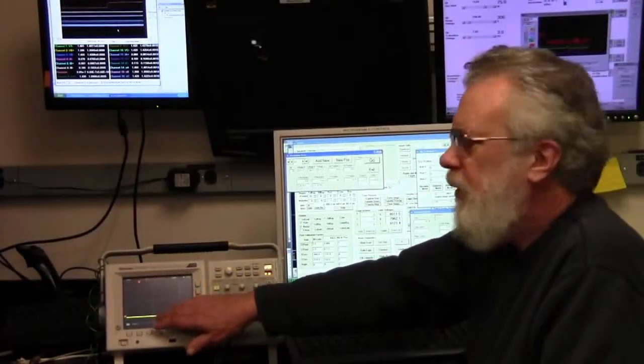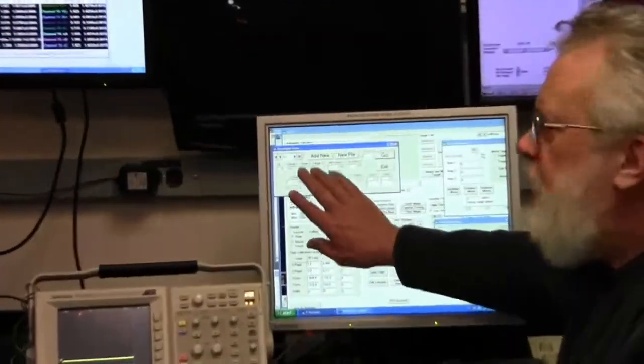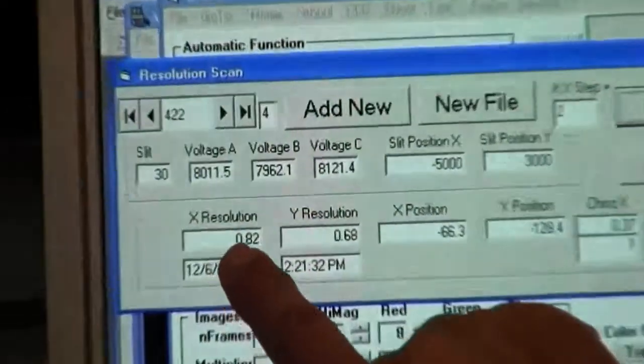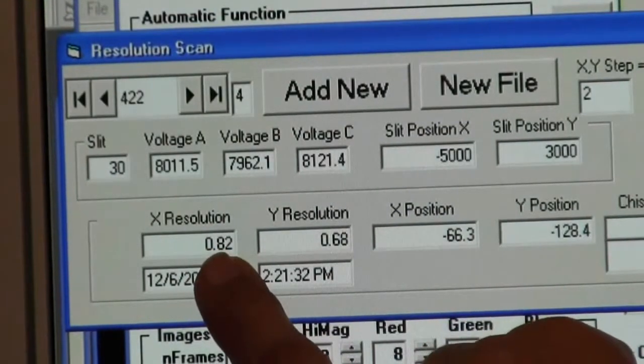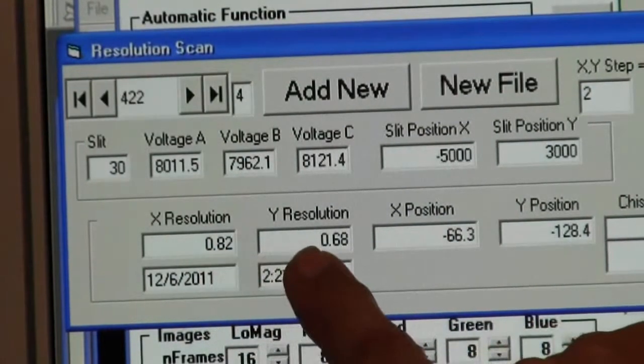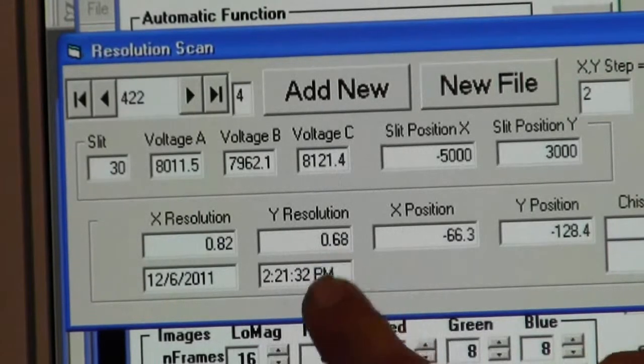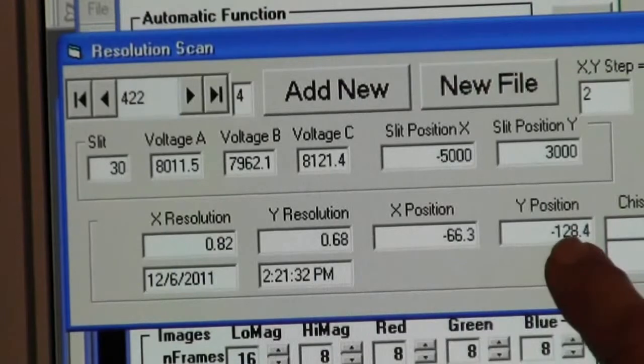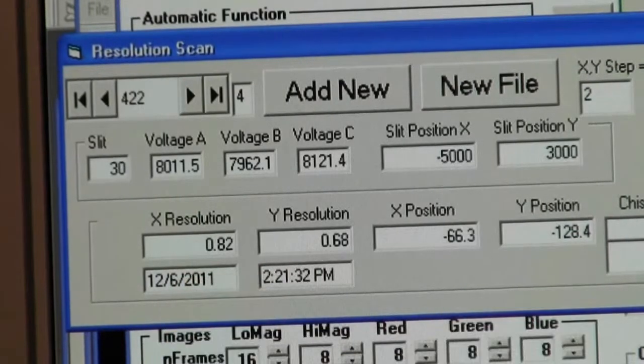Now the scan is finished and the shutter is closed and now we look at the output from this resolution scan. We see the numbers here that the diameter of the beam in the x direction measured in the x direction is 0.8 microns and measured in the y direction is 0.68 microns. And this also gives the position of the knife edge at the half value points.